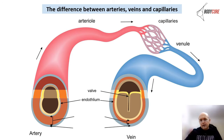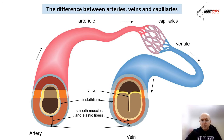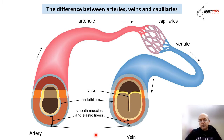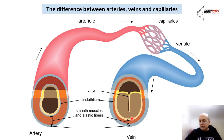Endothelium cells line the arteries, veins, and the heart muscle. We also have smooth and elastic fibres, which allow for contraction and expansion. You can see the difference in structure and size: arteries have to deal with a lot more force, so they're bigger and have more elastic fibre, whereas veins don't have to deal with as much force.